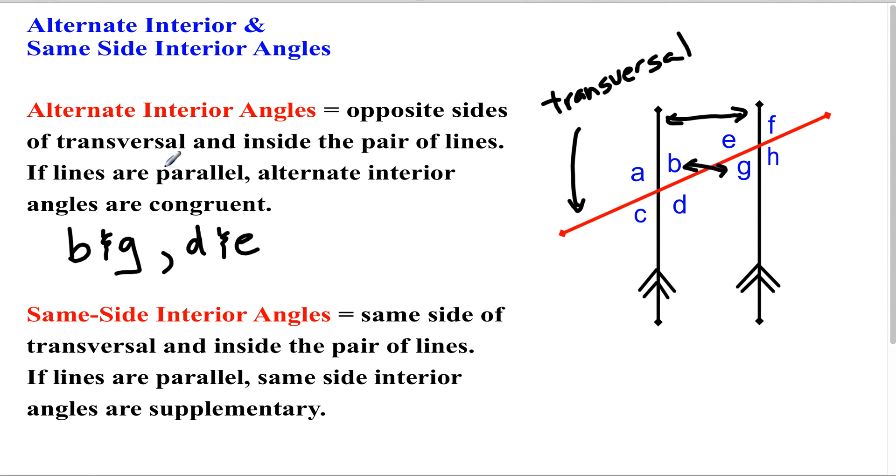And it says if the lines are parallel, and they are in this case, alternate interior angles are congruent. Now, if the lines aren't parallel, they aren't going to be congruent.